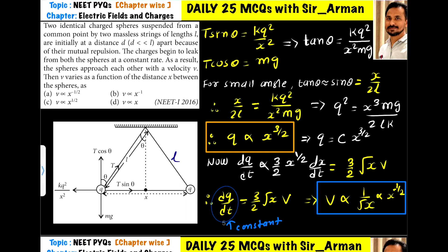Two identical charge spheres suspended from a common point by two massless strings of length l are initially at distance d apart because of their mutual repulsion. Both are identical and have the same charge, so they repel each other. The repulsive force between them is kq²/d². If they are at distance x apart, then the repulsive force is kq²/x².